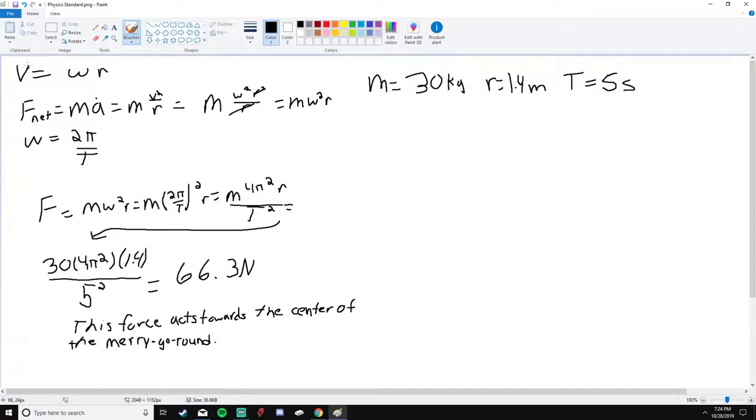So therefore we can use this to plug angular speed times radius in for velocity, since we do have a workaround for that, and you'll see what I mean in a minute.